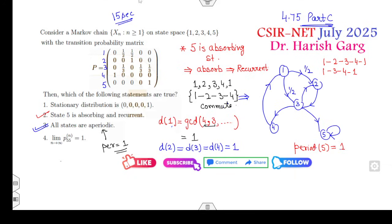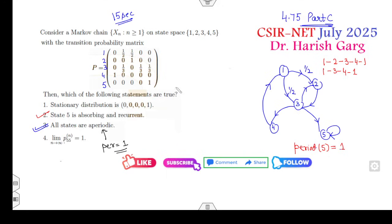Now look at the stationary distribution. How you can check about the stationary distribution? Again, it's very simple. First of all, look at the last one because 5 is my absorbing state. So if it is absorbing state, then the limiting probability of p55, this is the limiting probability, not the stationary probability, limiting probability is my 1. So yes, fourth option is also the exact option.